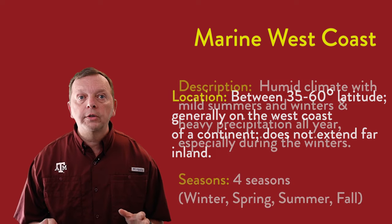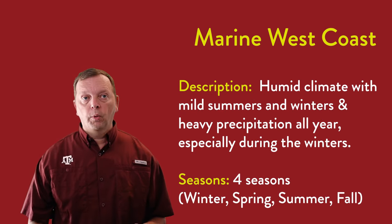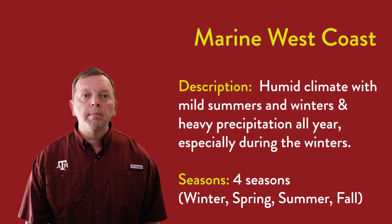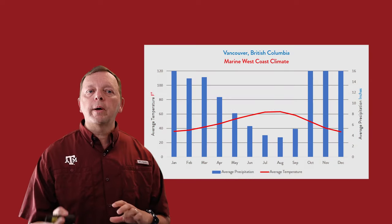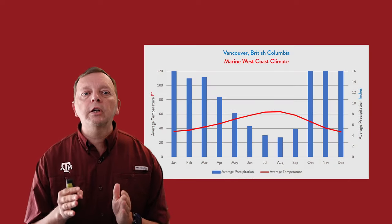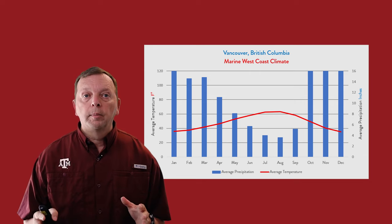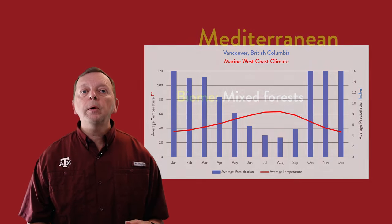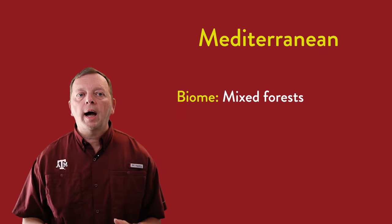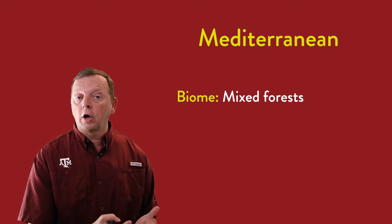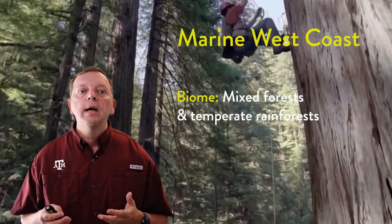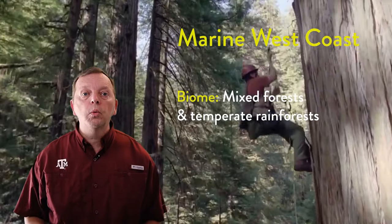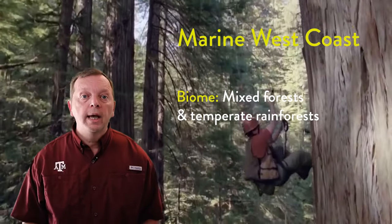Like all of our temperate climates, the marine west coast has four seasons. The temperature remains mild throughout the year; however, it receives a large amount of precipitation throughout the year, especially in the winter. In the marine west coast climate, we find mixed forests, and due to the high amount of precipitation — caused by both rain and fog rolling in off the cool oceans — we also find temperate rainforests, such as the redwoods in California.